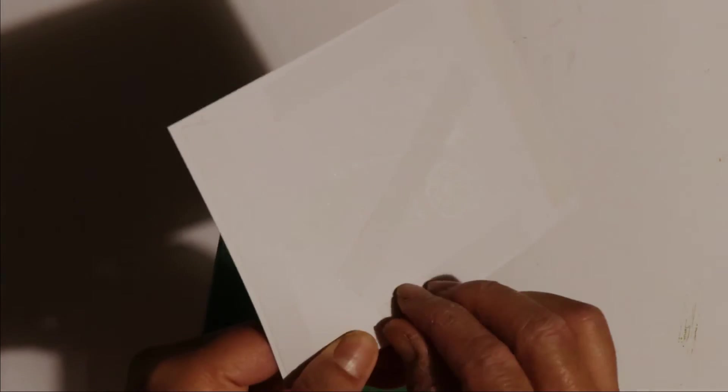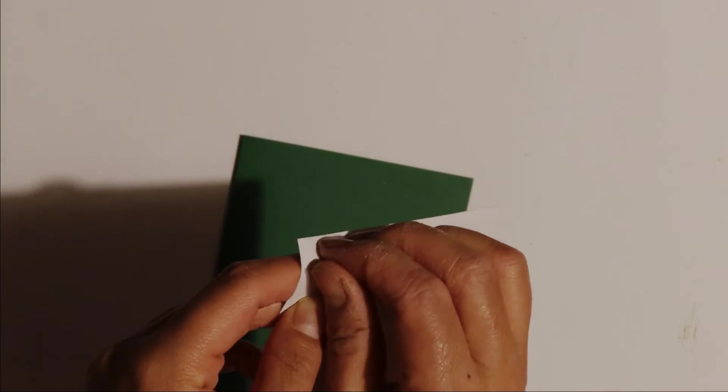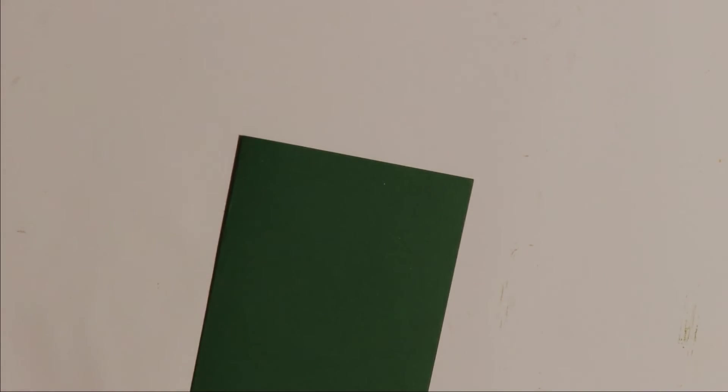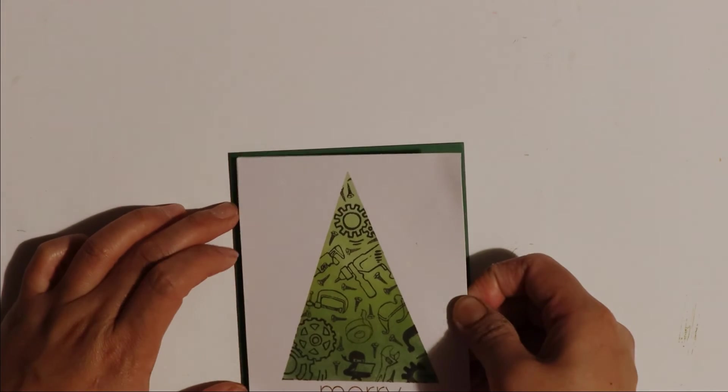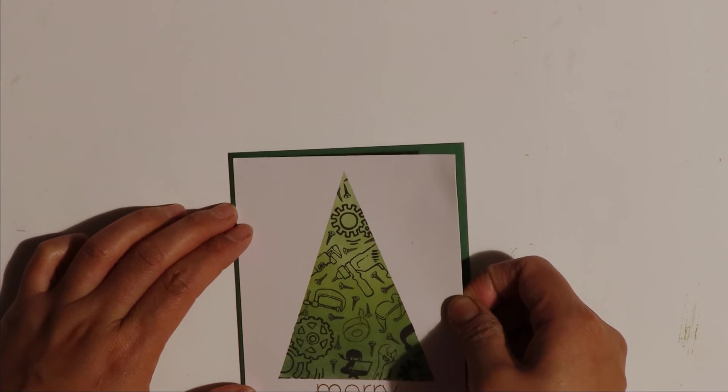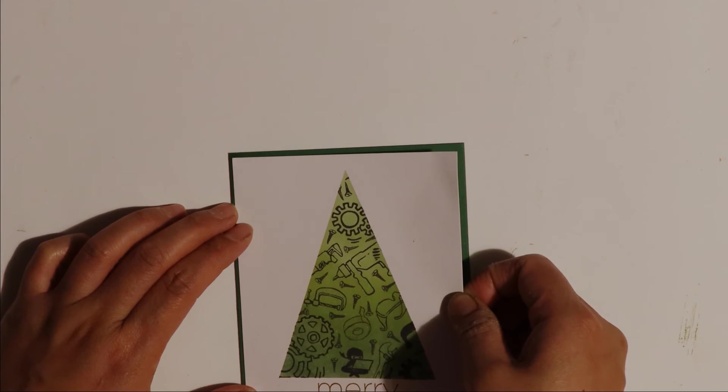I'm just removing the release paper on the back of the double-sided tape now so I can place it down onto the card base. I'm just going to make sure I try and get an even border around the card front when I place this down.